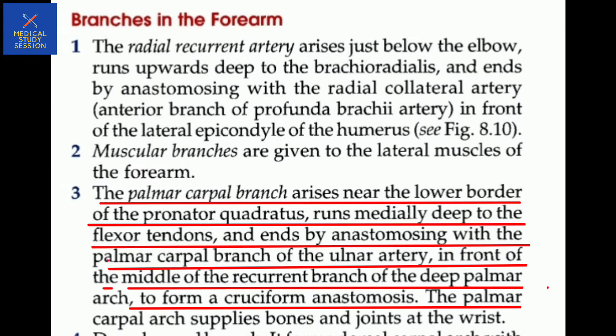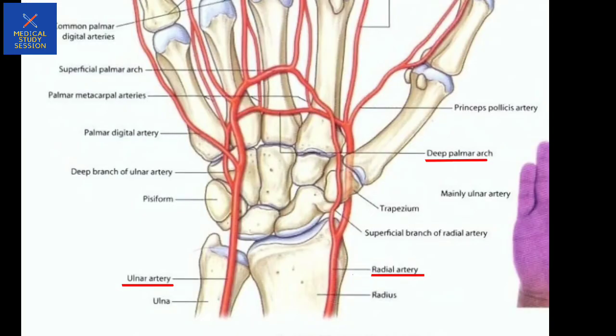Third, the palmar carpal branch arises near the lower border of the pronator quadratus, runs medially deep to the flexor tendons, and anastomoses with the palmar carpal branch of the ulnar artery in front of the wrist. It also receives a recurrent branch from the deep palmar arch to form the cruciform anastomosis. This palmar carpal branch arises from the lower border of the pronator quadratus and runs medially deep to the flexor tendons.